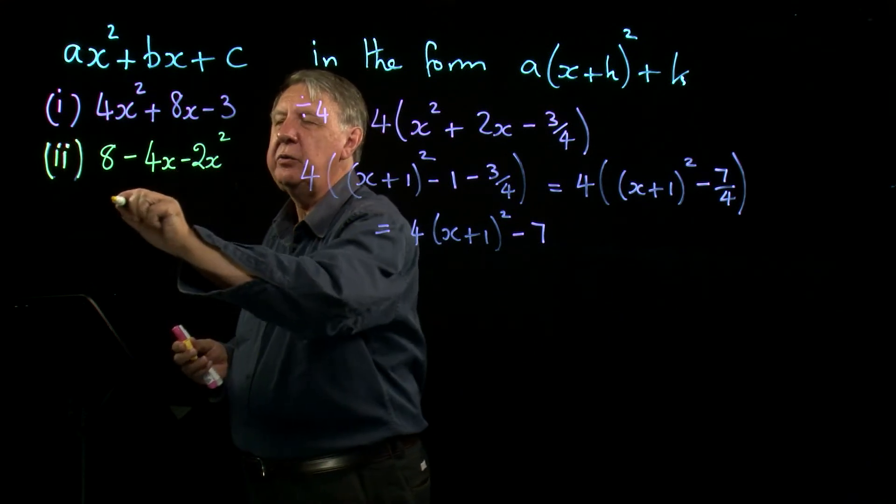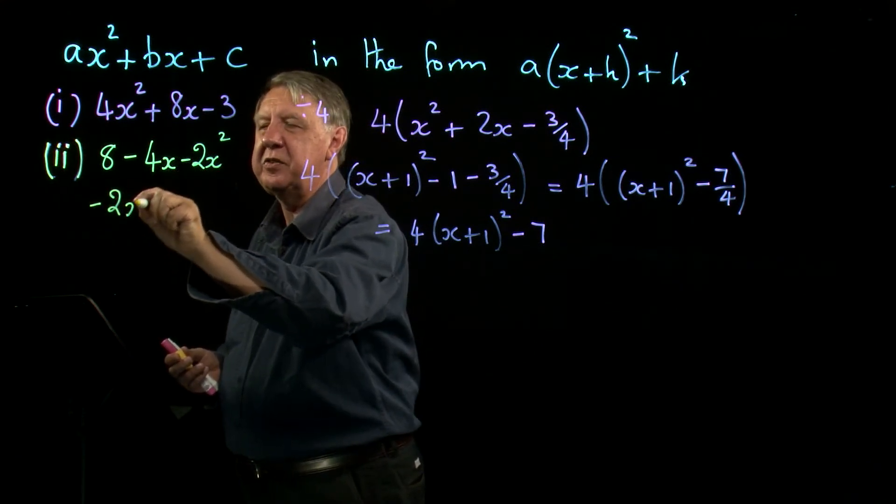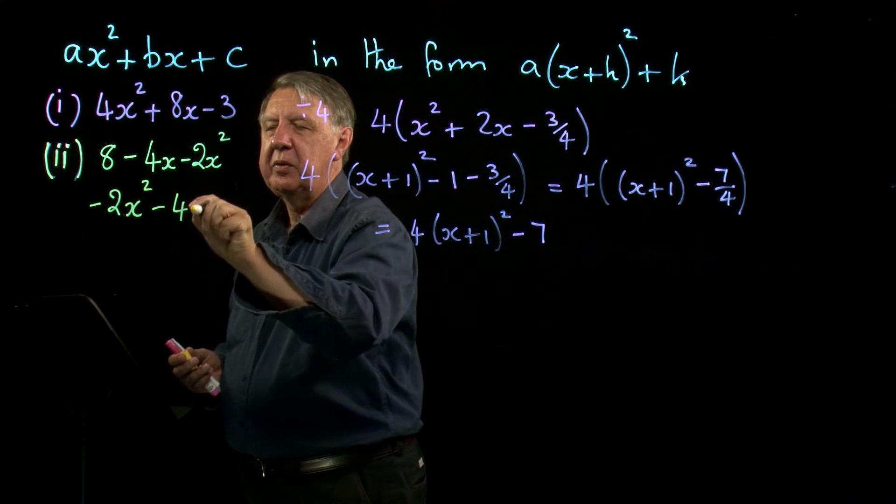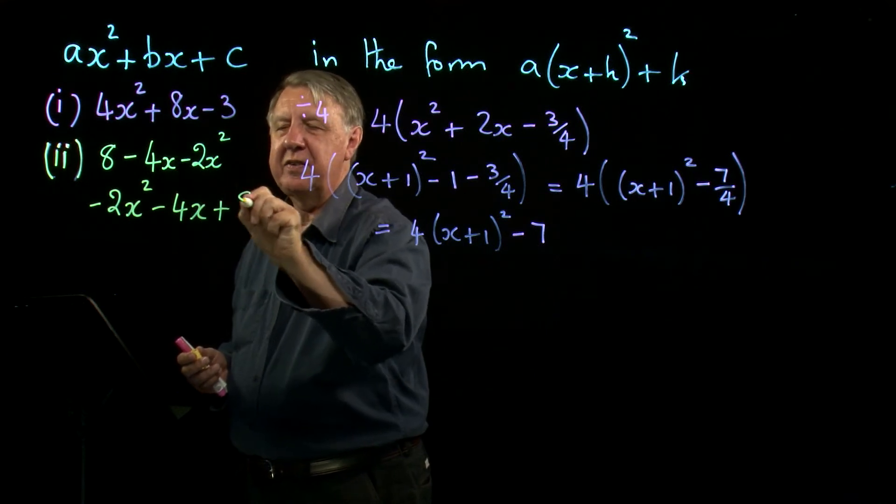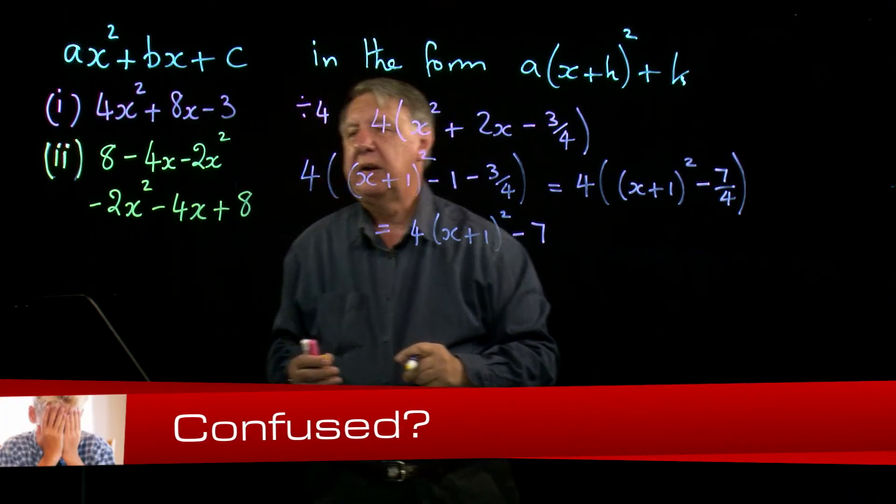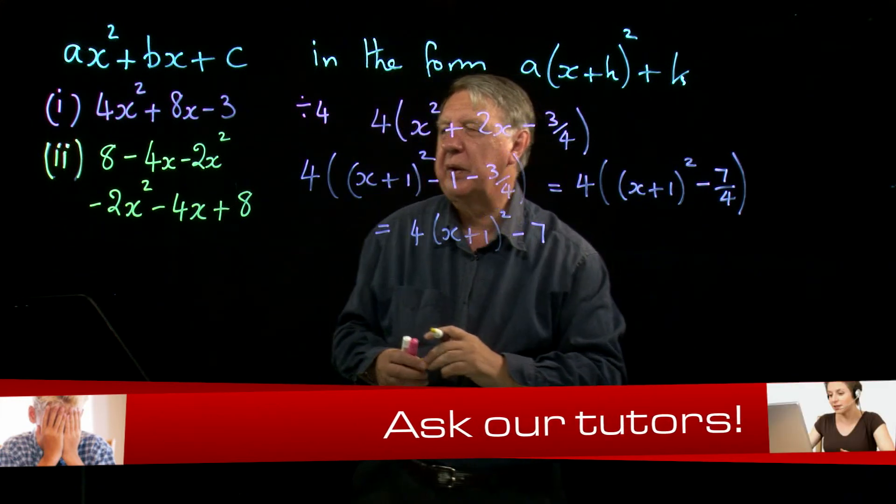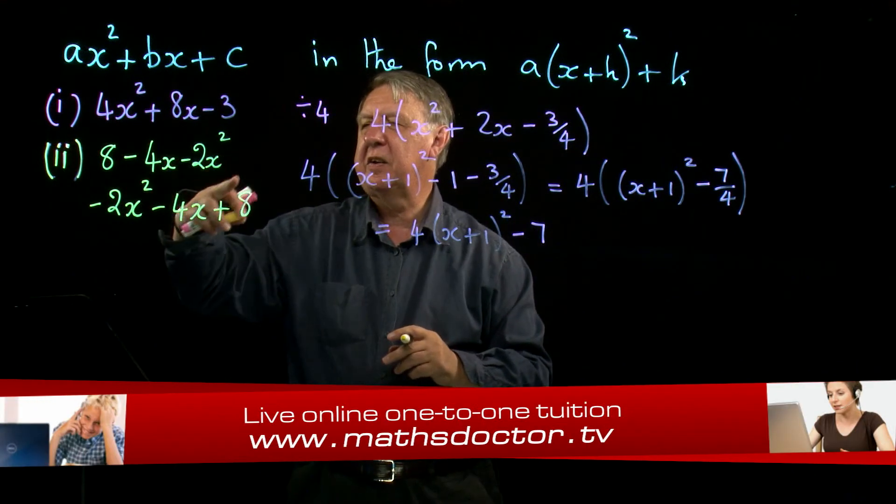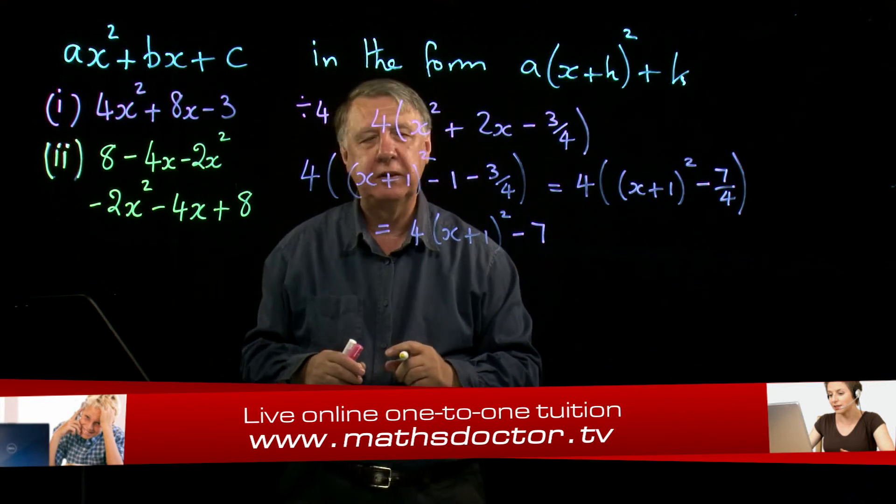In other words, we don't like this written as negative 2x squared minus 4x plus 8. Mathematicians have a thing about the way they write things down, and conventionally we would tend to write it down like that.